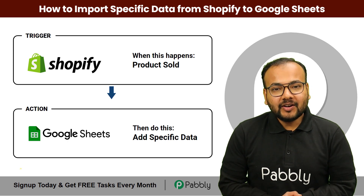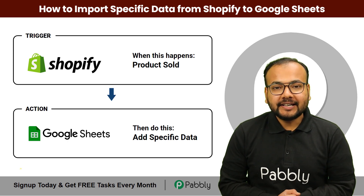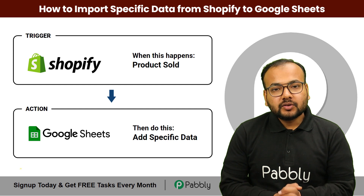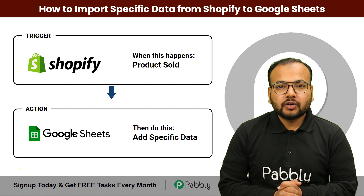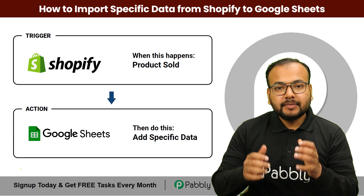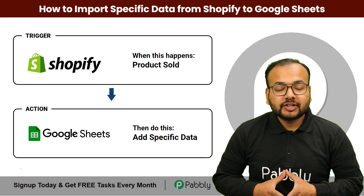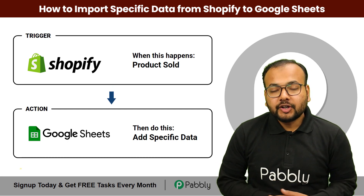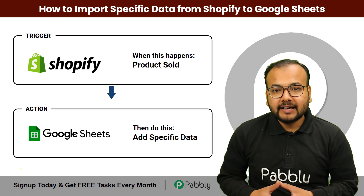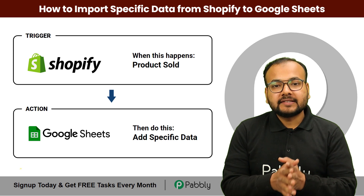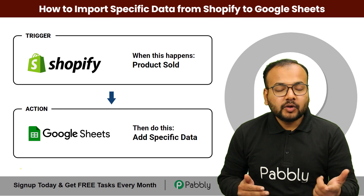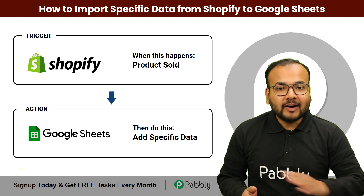In this video you will learn how you can import specific data from your Shopify store into Google Sheets automatically. If you're running a store on Shopify and you want the details of the orders of a particular product saved into your spreadsheet, this automation is for you. You do not have to manually see the order details or manually add the data. You just have to connect Shopify as the trigger and Google Sheets as the action, and this automation will do this for you without any coding.